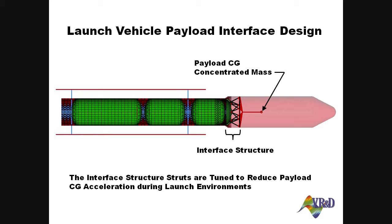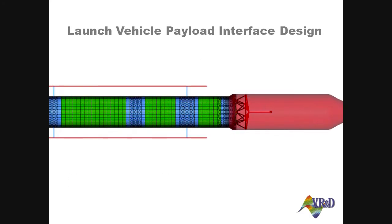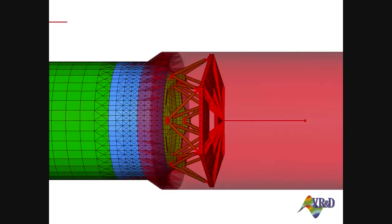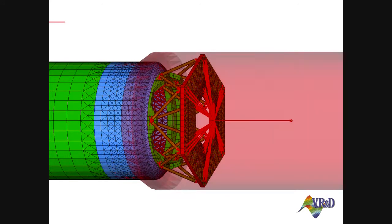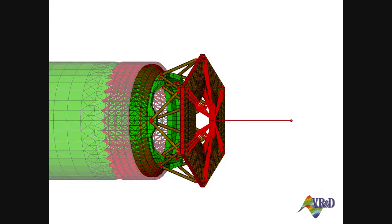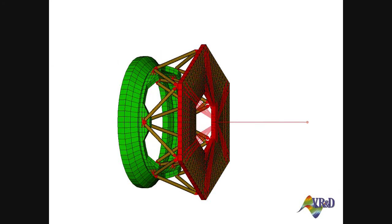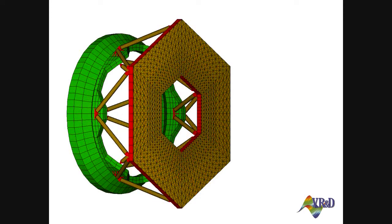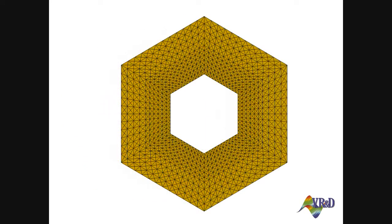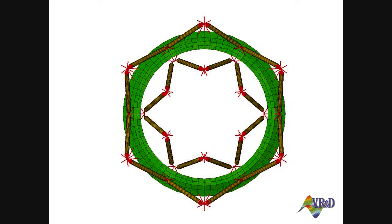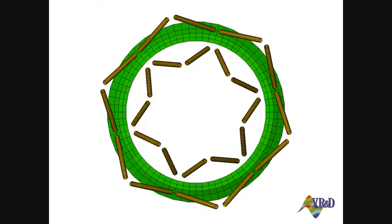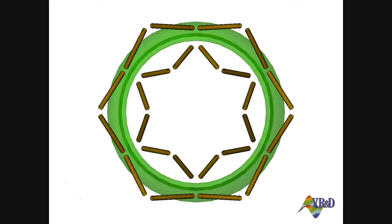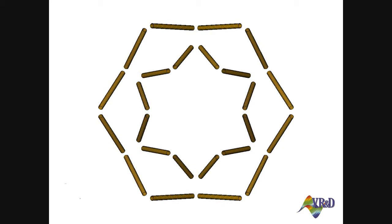In the case of a rough ride, one part of the system that may be modified is the interface structure. The interface struts can be sized using optimization to minimize the payload CG accelerations.